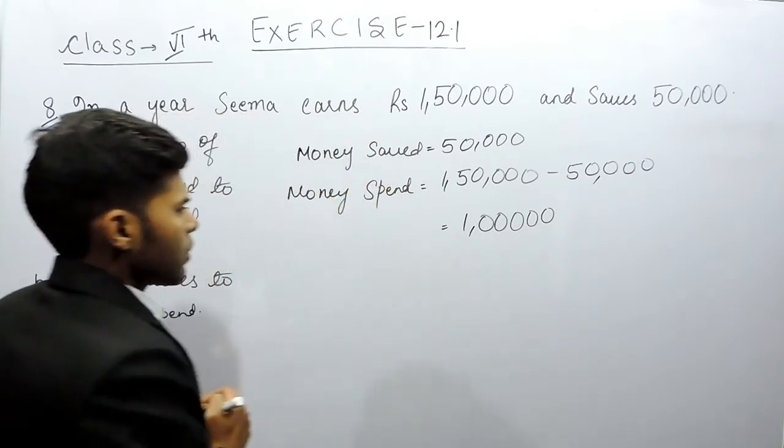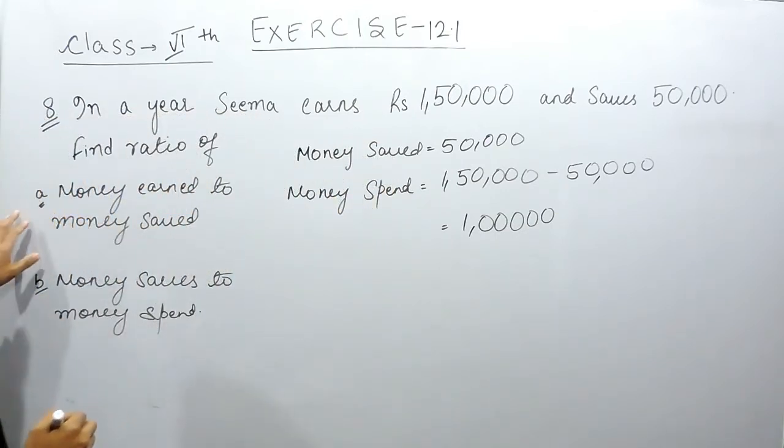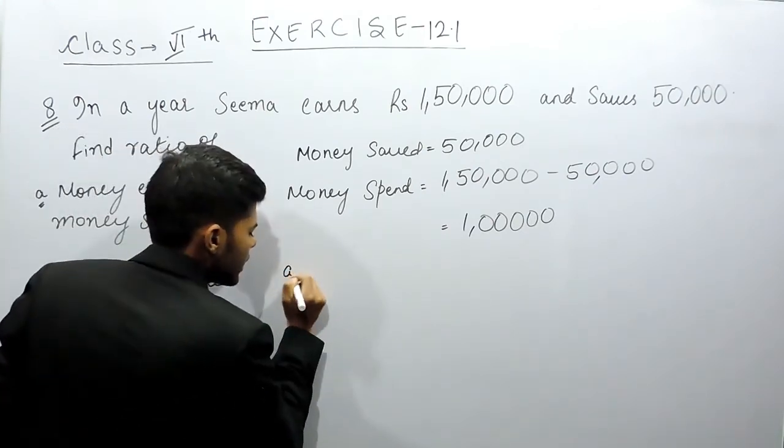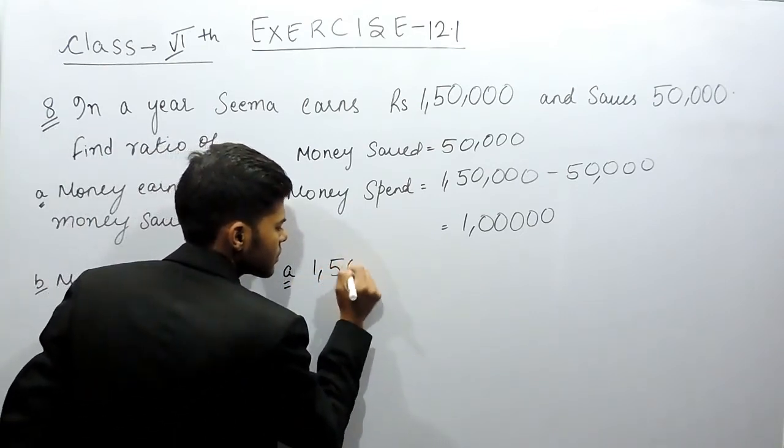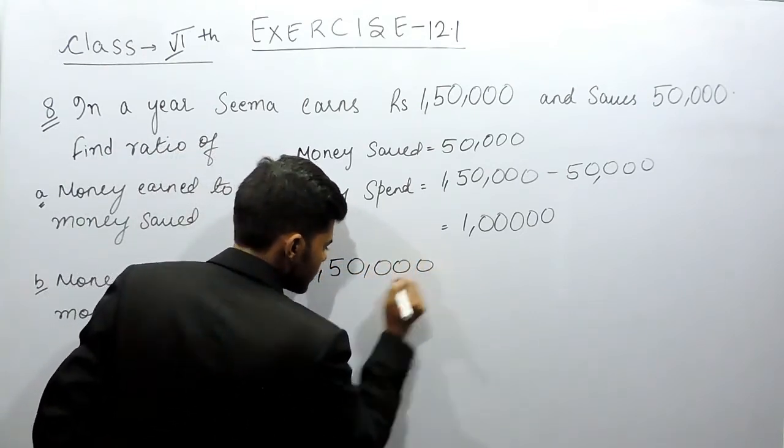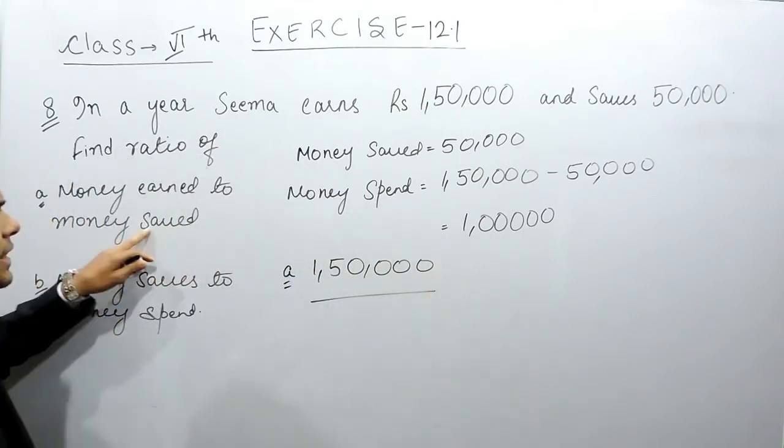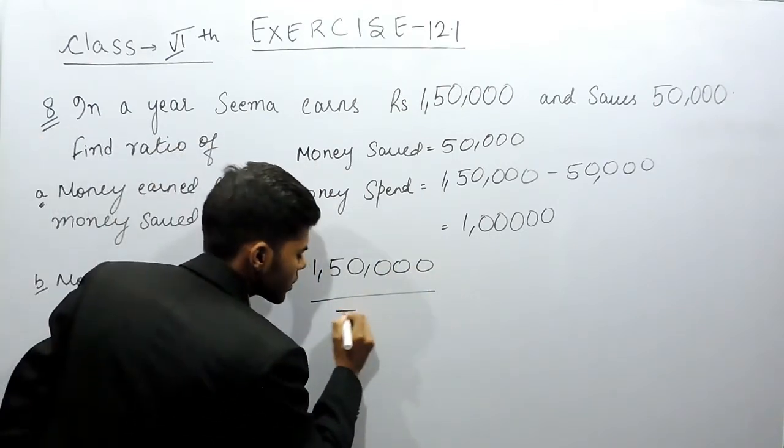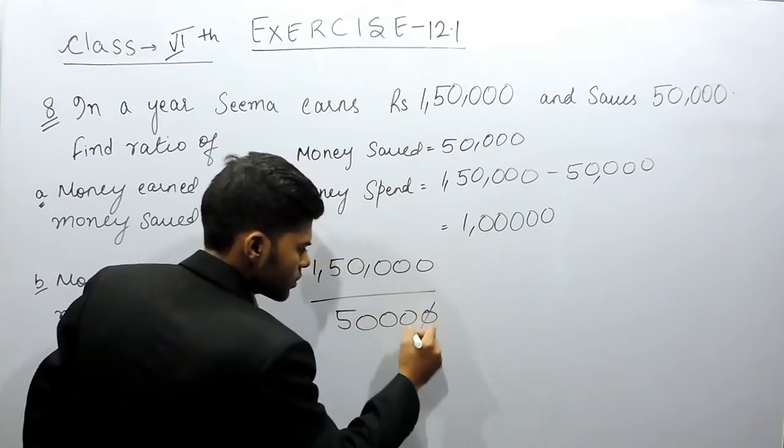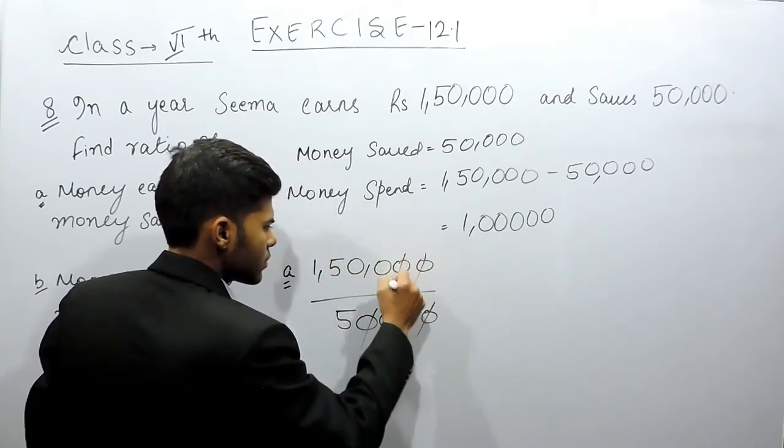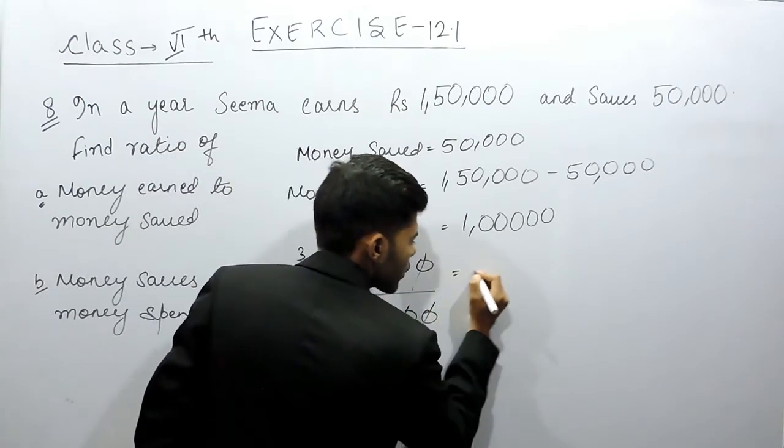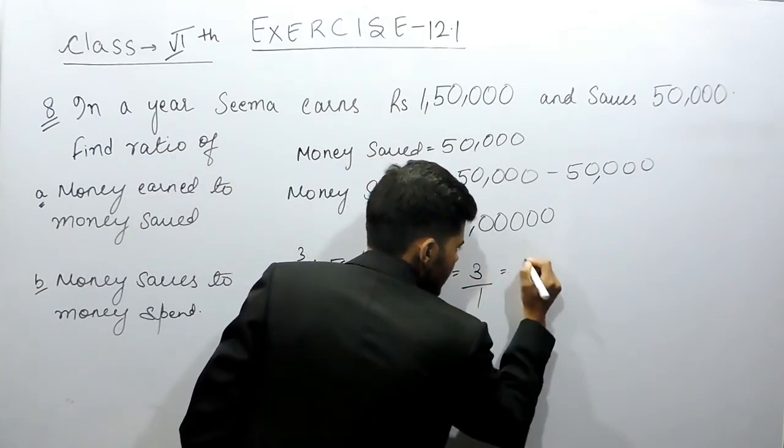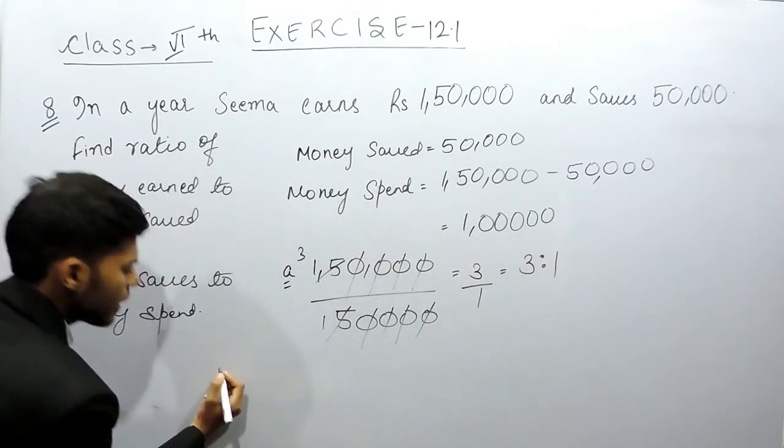So now we have to find the ratio of money earned to money saved. In part A, the total money earned is Rs 1,50,000 and money saved is Rs 50,000. So this will be cancelled out, this will be 1, so it will come out to be 3 by 1, that means 3 ratio 1.